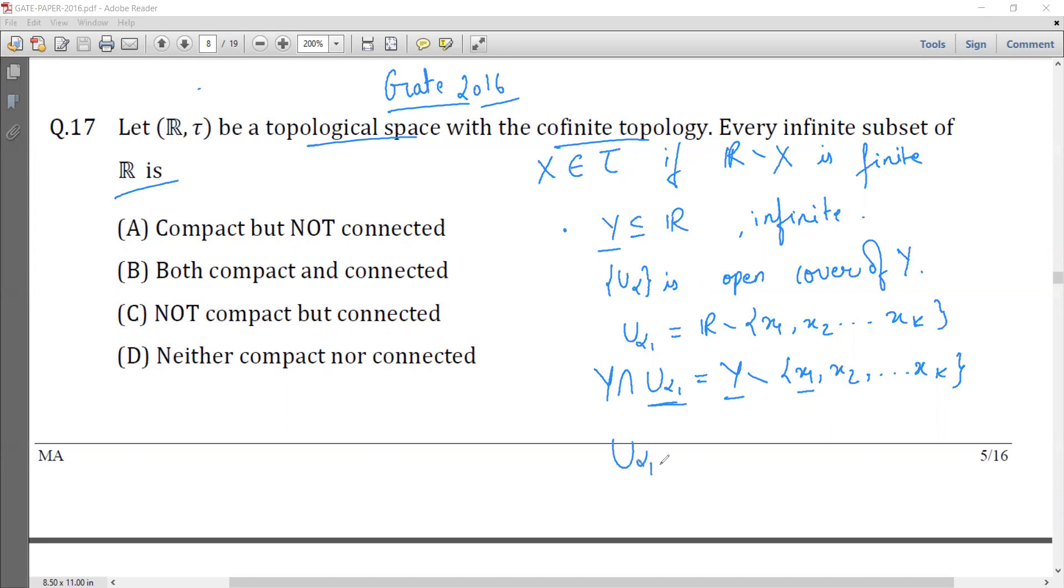So U alpha 1 union, let U x1 cover x1 union U x2, let U x2 cover x2, so on up to U xk. So we have found finitely many sets from this open cover which cover Y. That is, for an arbitrary open cover we have found a finite subcover. This implies Y is compact.